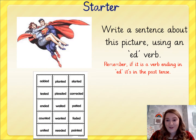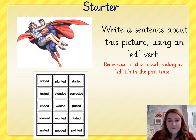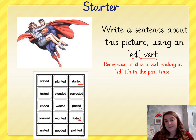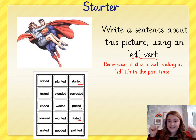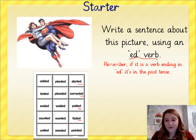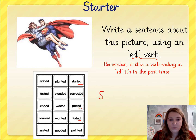Before anyone says what's one of those, I've put some examples of ED verbs on the screen for you. An ED verb is just a doing word that's in the past tense and it ends with ED. It's the spelling rule that has ED at the end. We've looked at these types of words before and we know that if it's got an ED ending, it just means that it's in the past tense — it's something that's happened. My sentence about this picture might be: Superman saved the lady from the evil villain. My ED verb was the word 'saved' because it ends in ED.